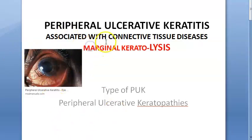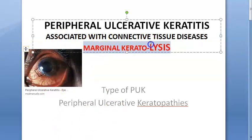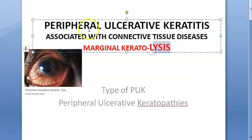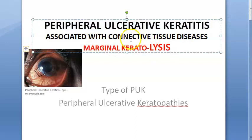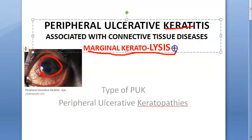In this video, let us look at marginal keratolysis. The word 'lysis' is key here. This is essentially peripheral ulcerative keratitis — a peripheral problem, as the name itself suggests: peripheral ulcerative keratitis of the cornea. This is also called marginal keratolysis.